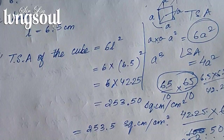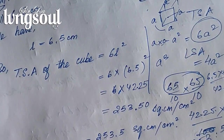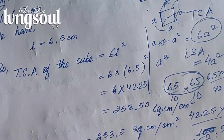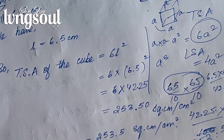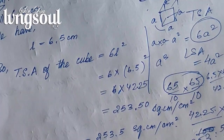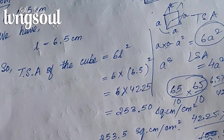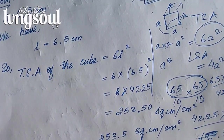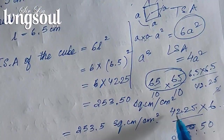Now finding the volume of the cube. Volume of cube formula is L cubed, meaning the side cubed. So volume equals 6.5 cubed, which is 6.5 times 6.5 times 6.5. 6.5 squared equals 42.25.